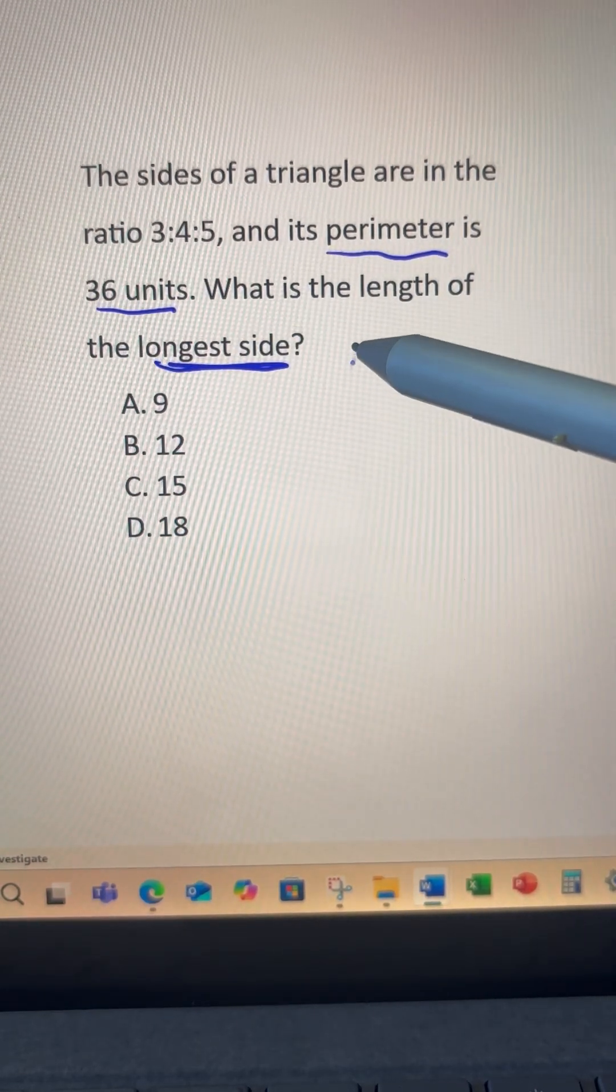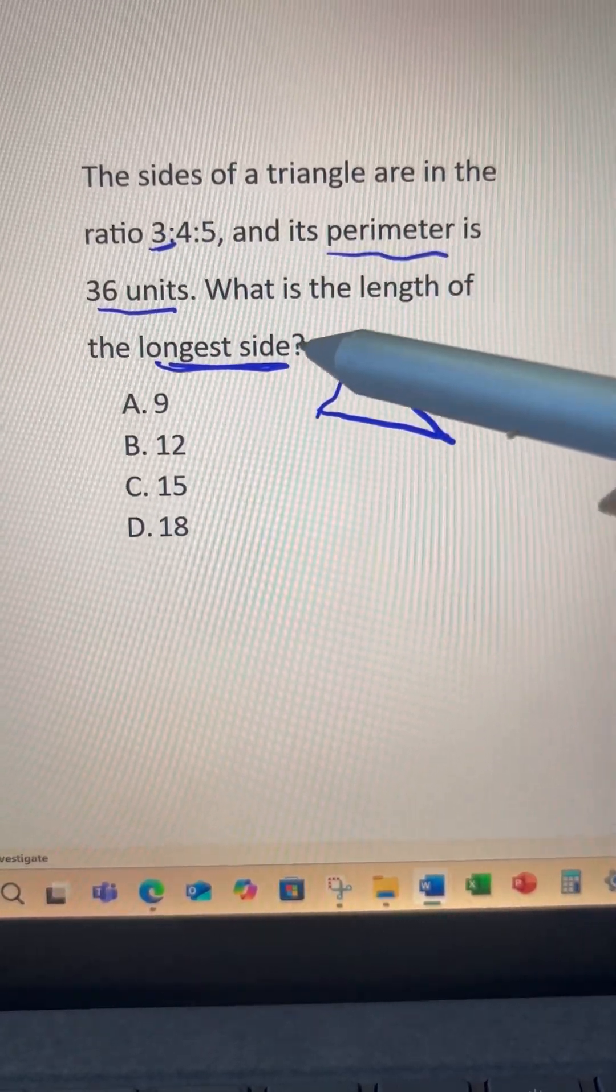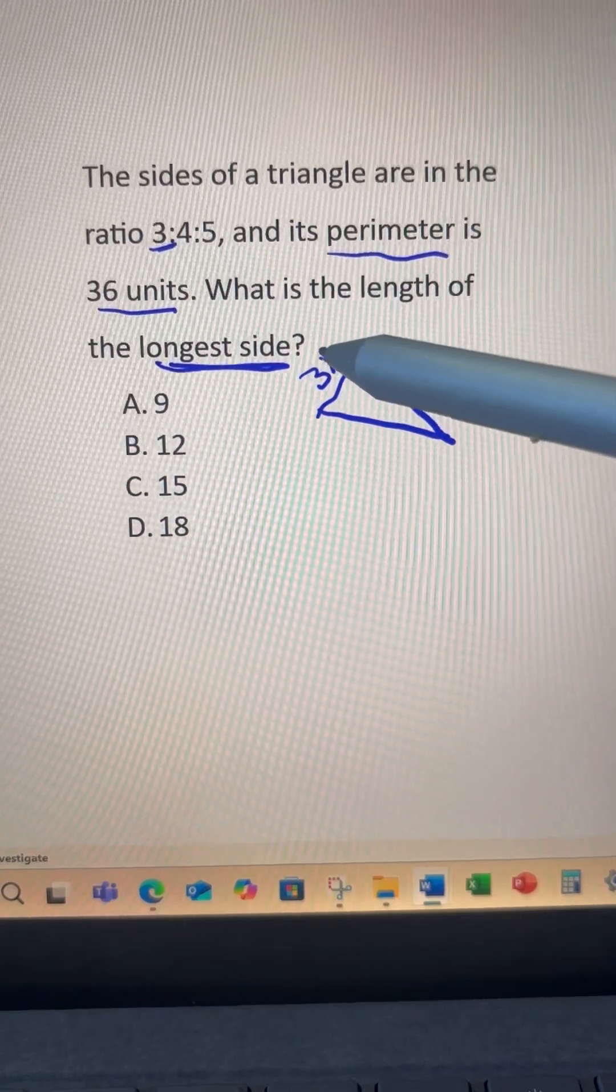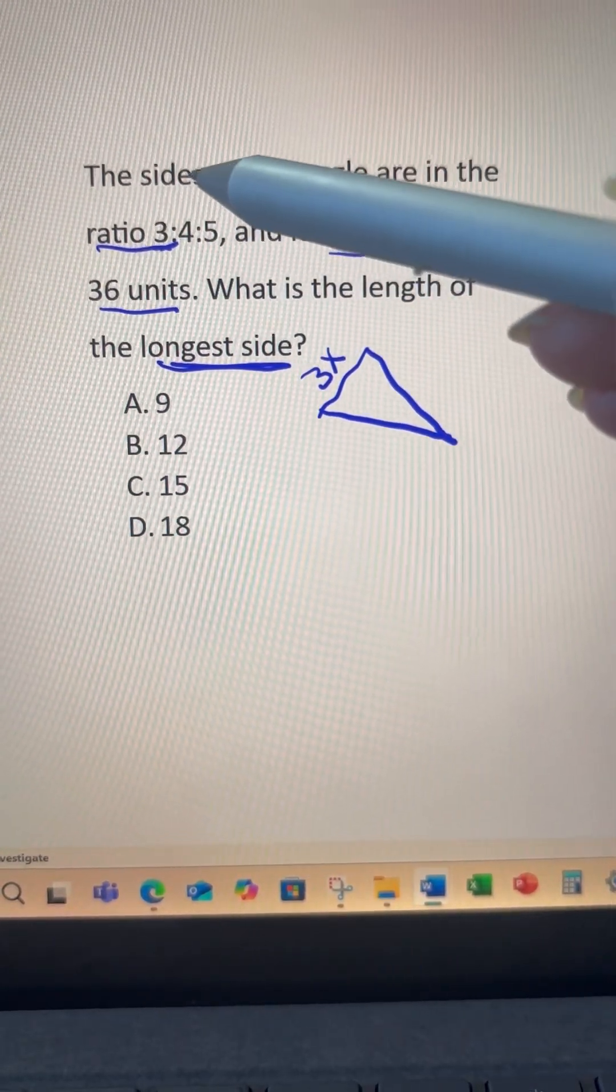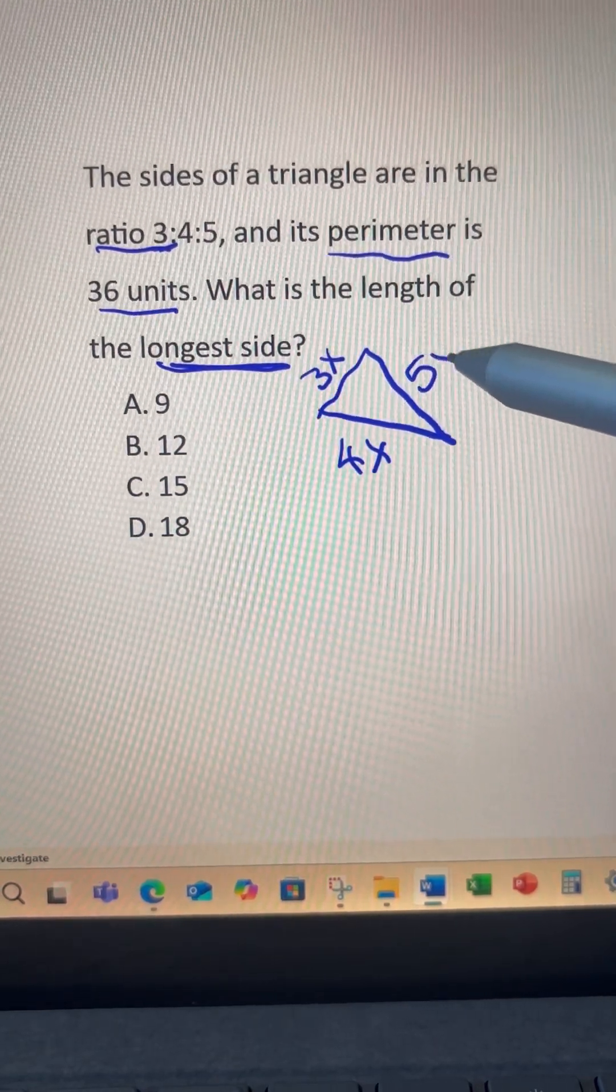So we can see we have one triangle. The smallest side is 3, so we can let the variable be 3x because that is a ratio. It's not the actual length. Now we can see here is 4x and the longest side is 5x.